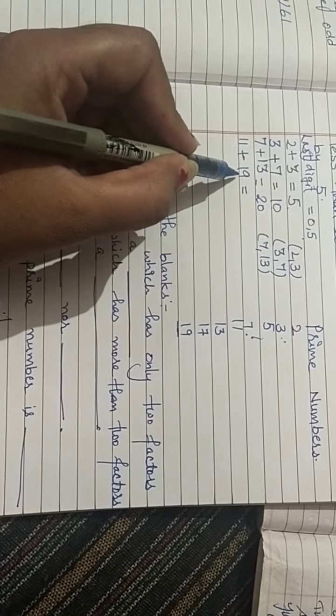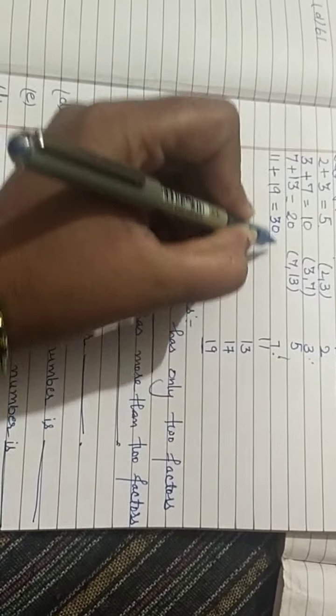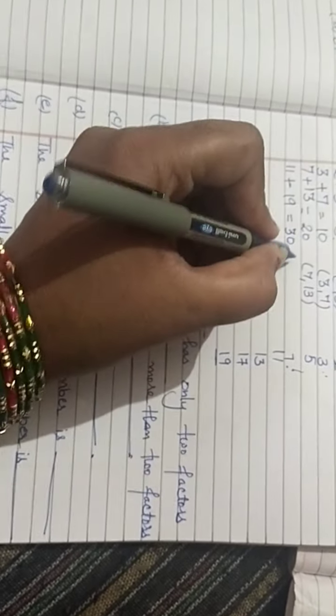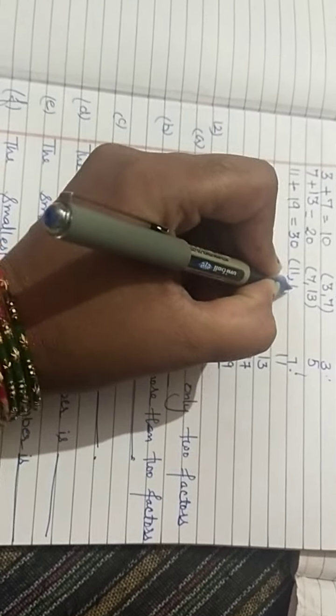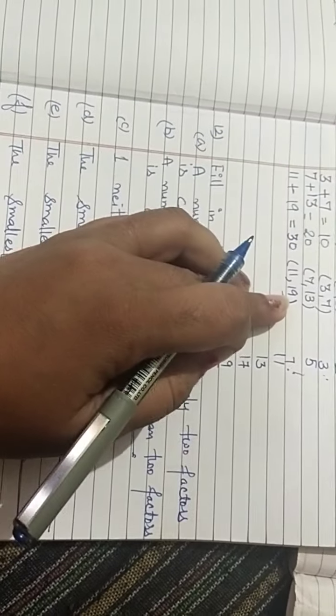Next is 11 plus 19. Then we add, we get 30. This also comes in 5 table. It means 11 and 19 is a pair.